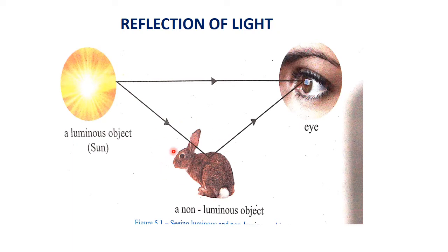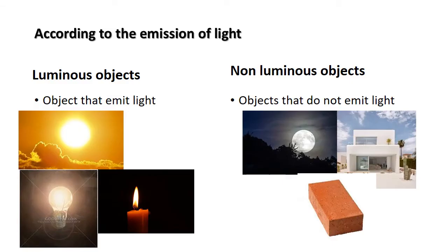To see a non-luminous object — objects which do not emit light — the light should be reflected on that body and it should reach our eye. In a dark place we cannot see any objects because light is required to create a visual sensation. According to the emission of light, we can classify objects as luminous objects and non-luminous objects.